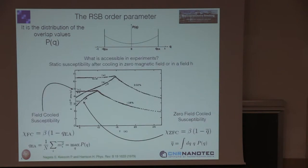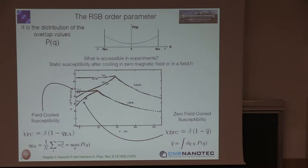What is known so far, since the beginning, is that we can actually access experimentally the Q Edwards-Anderson — this is the self-overlap — by means of measurements of the field-cooled susceptibility in spin glasses, or we can also access the average overlap in the zero-field-cooled susceptibility measurements.